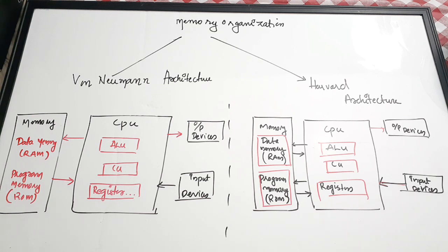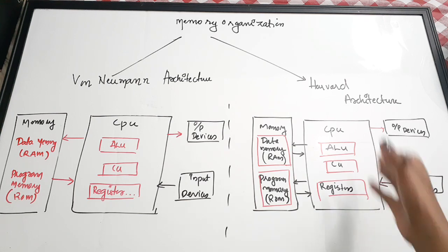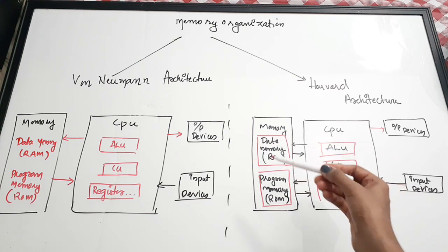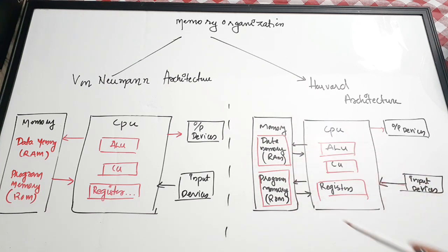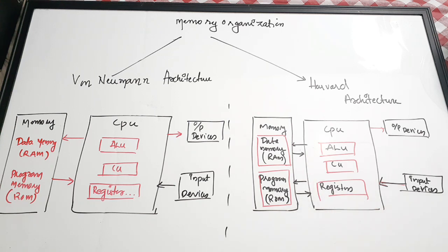In Harvard architecture, there is a clear separation between the data memory and the program memory. Data is generally stored in RAM and program memory is in ROM. Separate data and program memories are available, and there are separate buses for accessing each. Therefore, the CPU can access both instructions and data at the same time — that is the main difference between Von Neumann and Harvard architecture.